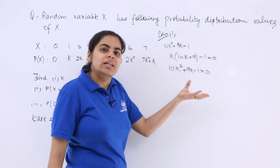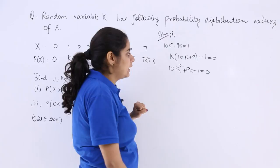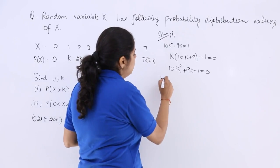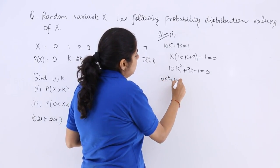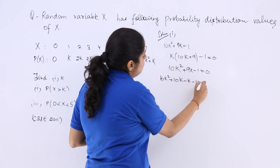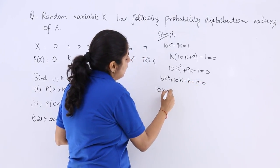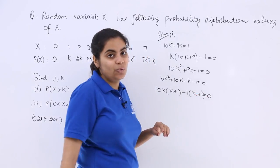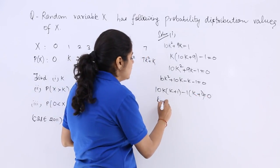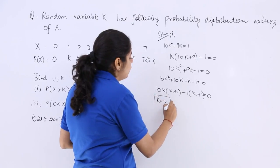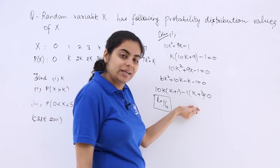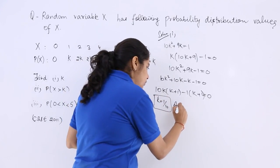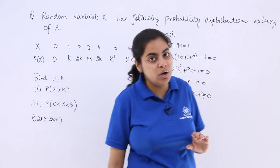Now this is the quadratic equation. Now we can take out the factors of this quadratic equation. I know that this will be 10k square plus 10k minus k minus 1 is equal to 0. 10k taken as common, k plus 1 minus 1 taken as common, k plus 1 is equal to 0. What is the answer from here? k is equal to 1 over 10 because we cannot take negative values for k. So this is the answer to the first part for the value of k.